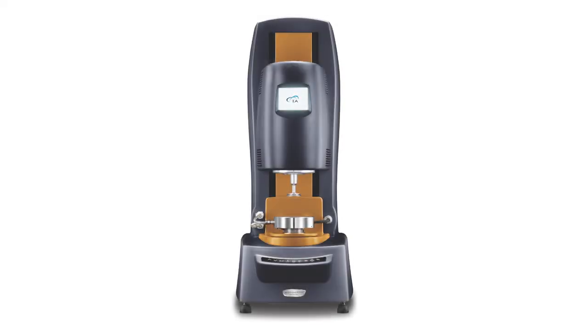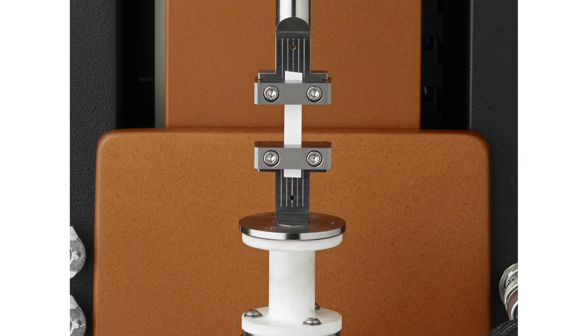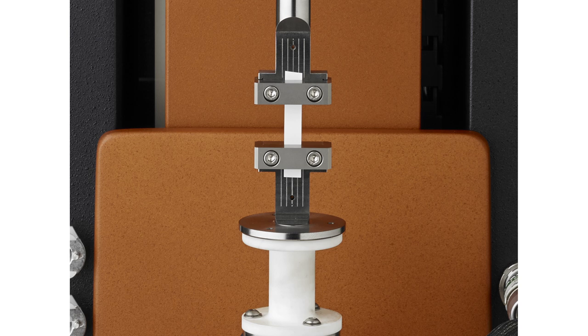Using the force rebalance transducer, the DHR is a rotational rheometer capable of performing linear dynamic mechanical analysis. The linear film tension clamp can be used to study viscoelastic properties of a solid film or fiber specimen in tension.